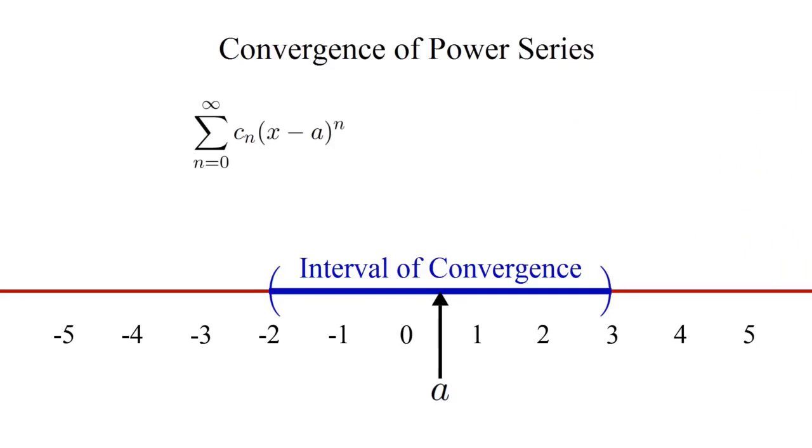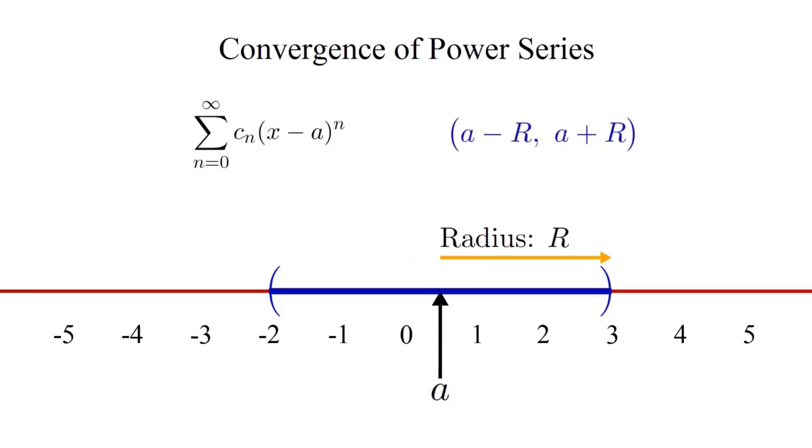Since the interval of convergence is always centered at the number A, we call the distance between A and either endpoint of the interval the radius of convergence, and denote it with the letter R. Thus, the endpoints of any power series are A minus R and A plus R. The exact value of R is determined by the coefficient C sub n of your power series. Change the coefficients, and you change the radius.